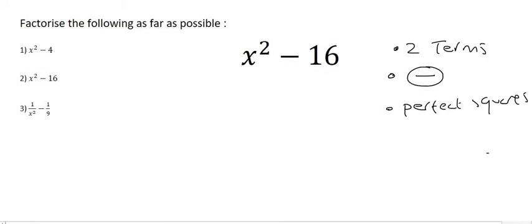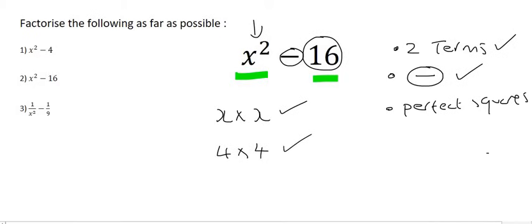So how many terms do we see over here? That's two terms, so we are satisfied with that. Are they separated with a minus? Yes, they are. And are they perfect squares? What times what gives us x squared? That's x times x. So that's a perfect square. What times what gives us 16? That's 4 times 4. So that's a perfect square. What times what gives us 11? Yeah, so that one's a bit tricky, right? So I was just testing you there. 11 is not a perfect square, because you can't find two numbers that multiply together to give you 11.